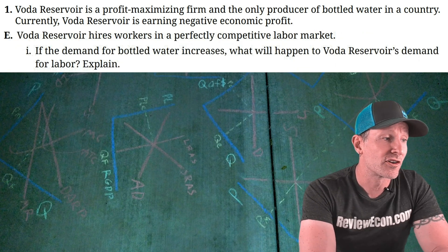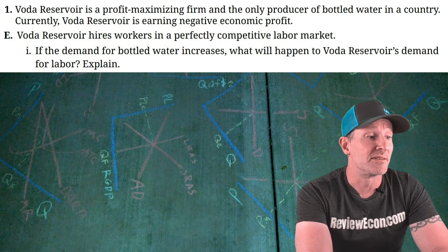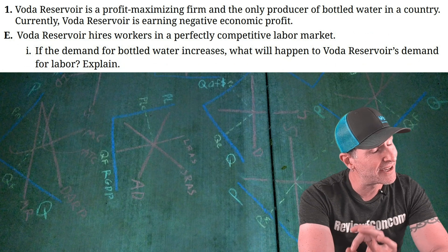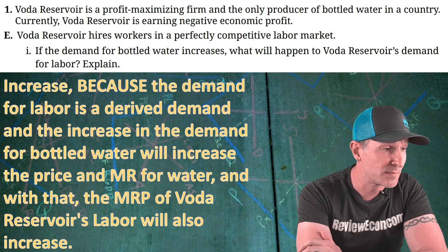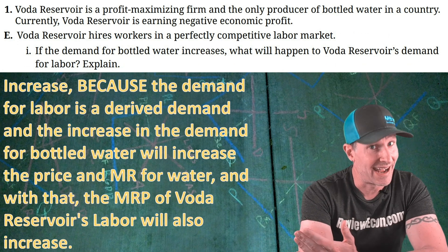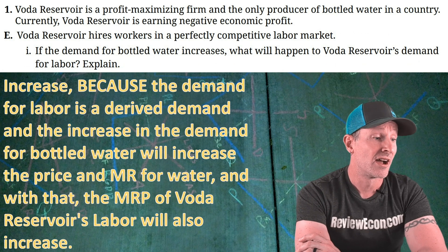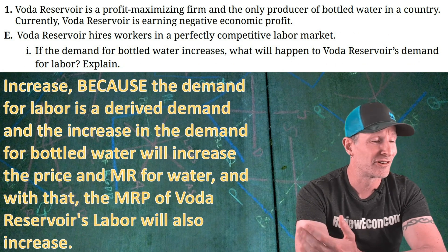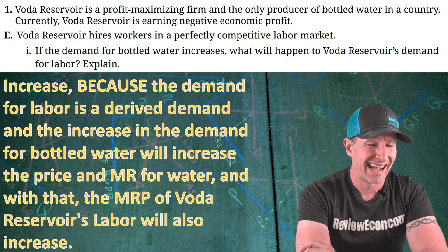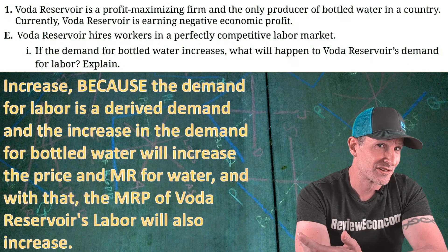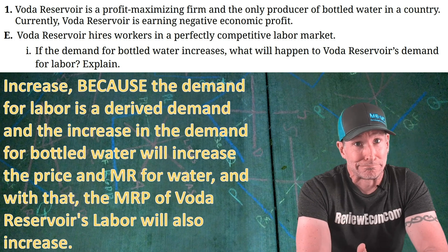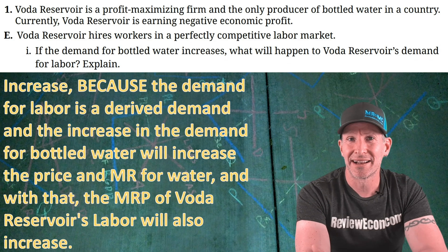Part E: Voda Reservoir hires workers in a perfectly competitive labor market. If the demand for bottled water increases, what will happen to their demand for labor? My answer: increase, because the demand for labor is a derived demand. The increase in demand for bottled water will increase the price and marginal revenue, and with that, the marginal revenue product of Voda Reservoir's labor will also increase. The formula is marginal revenue times marginal product — I may have lost a point by not including that explicitly.